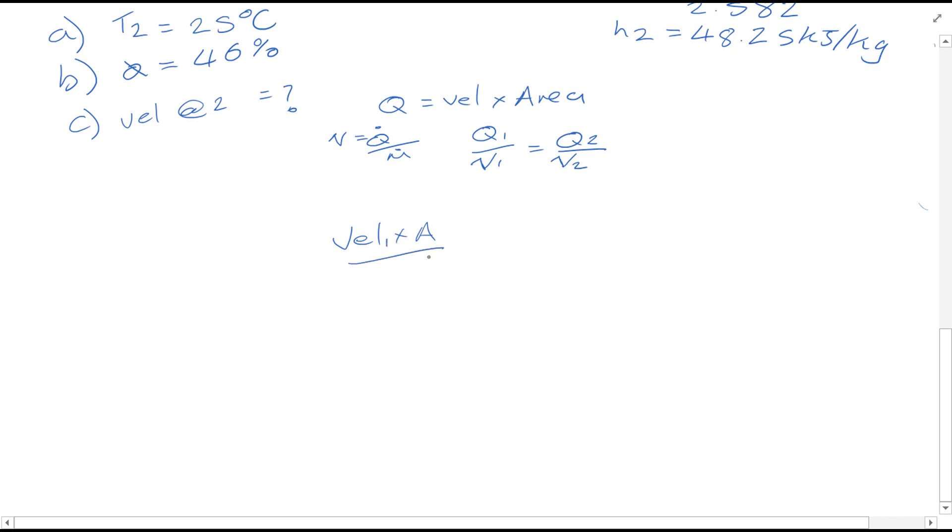Watch how we can simplify this: we know velocity times area V1 over specific volume at 1 equals velocity 2 times area over specific volume at 2. We can cancel the area because it's constant, then rearrange to find velocity 2, which equals velocity 1 times specific volume 2 divided by specific volume 1. This equals 18 times 0.856 divided by 0.876, and velocity 2 is found to be 17.59 meters per second.